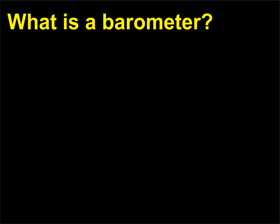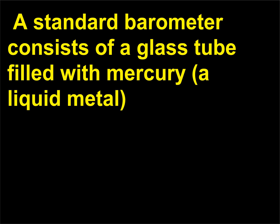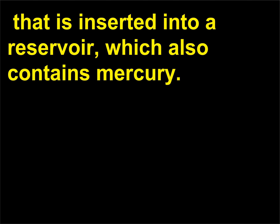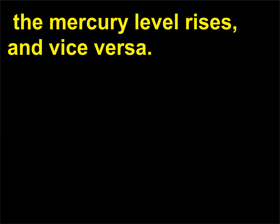What is a barometer? A barometer is a device that measures air pressure. A standard barometer consists of a glass tube filled with mercury, a liquid metal, that is inserted into a reservoir which also contains mercury. When the surrounding air pressure exerts more weight on the reservoir than the mercury in the tube does, the mercury level rises, and vice versa.